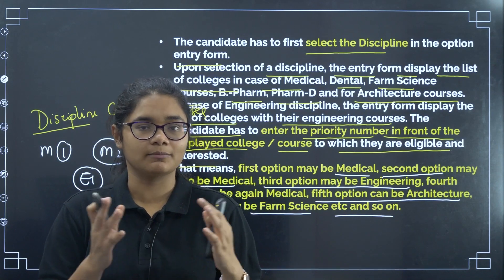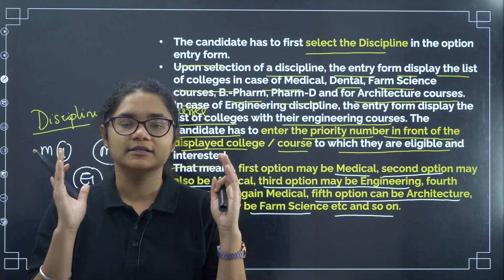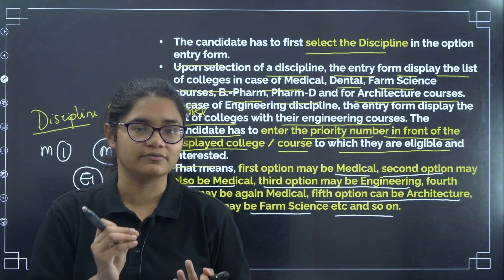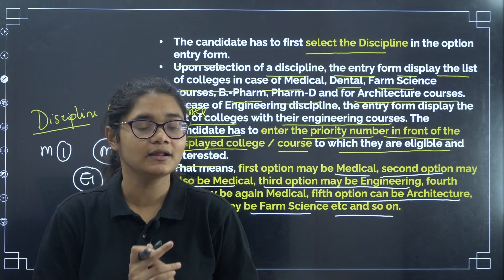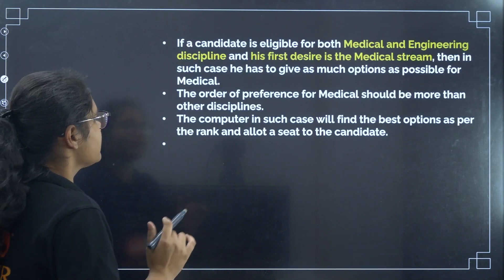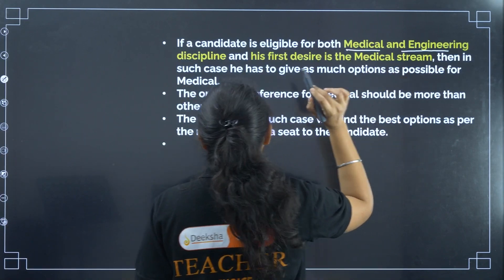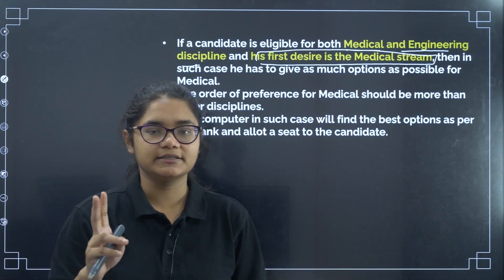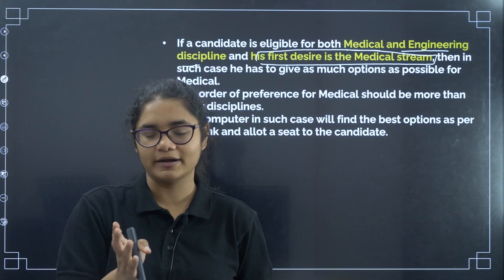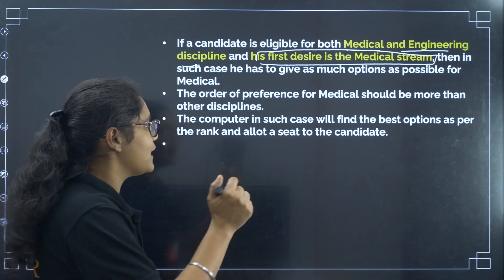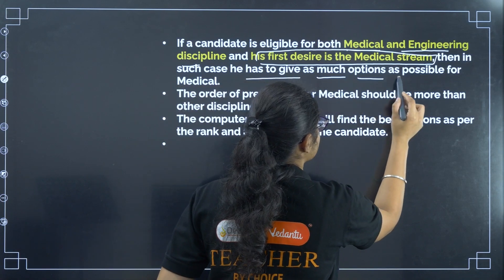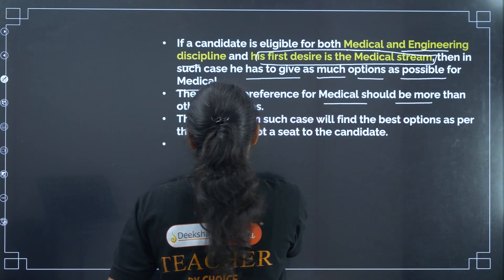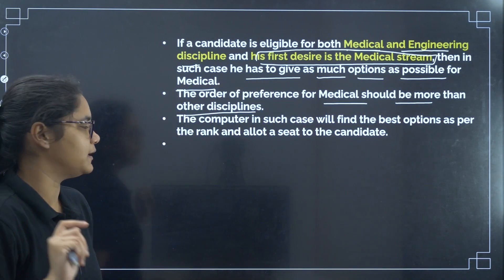Students who are eligible for multiple disciplines have a lot of choices to fill, so please work on all these options. Check each and every option that is available, check their scope, and then arrange them in your preference order. If a candidate is eligible for both medical and engineering and their first desire is medical — if not getting medical, then engineering — in such cases, give as many options as possible for medical. The order of preference for medical should outweigh other disciplines if you want medical first.